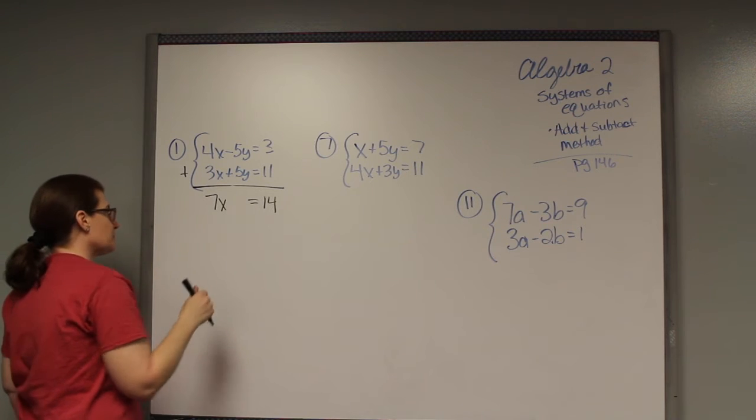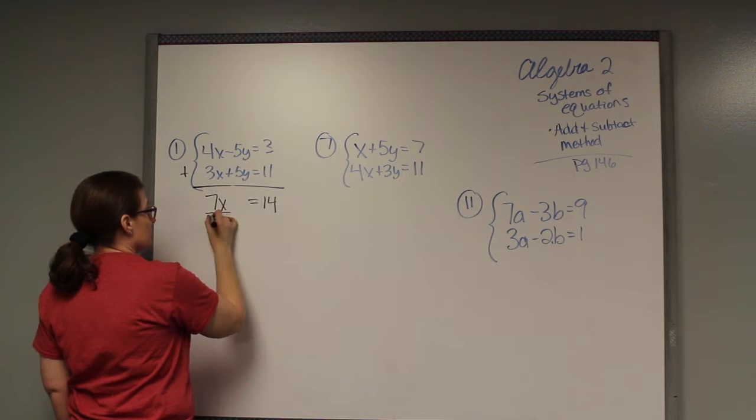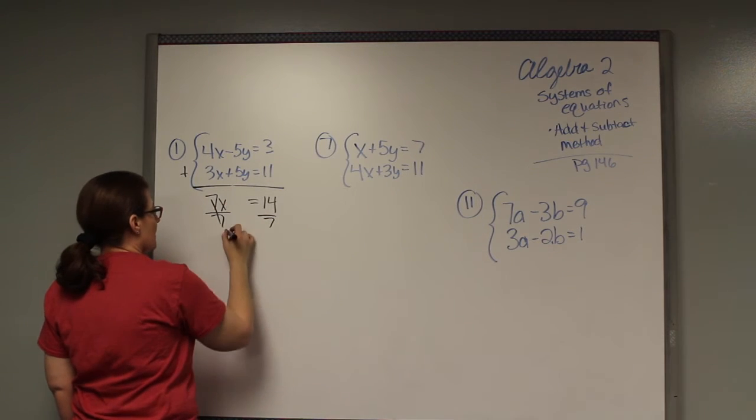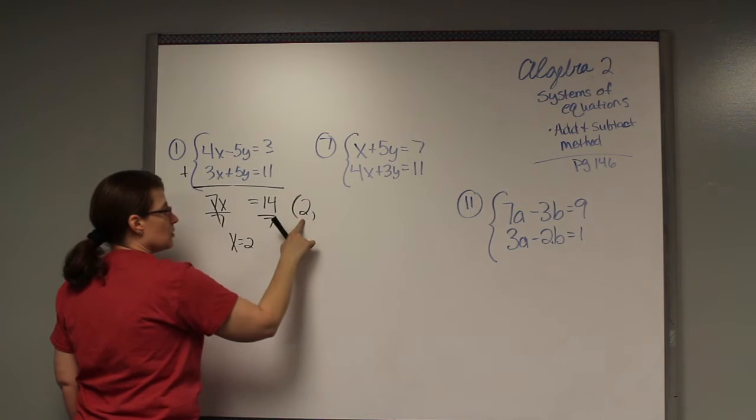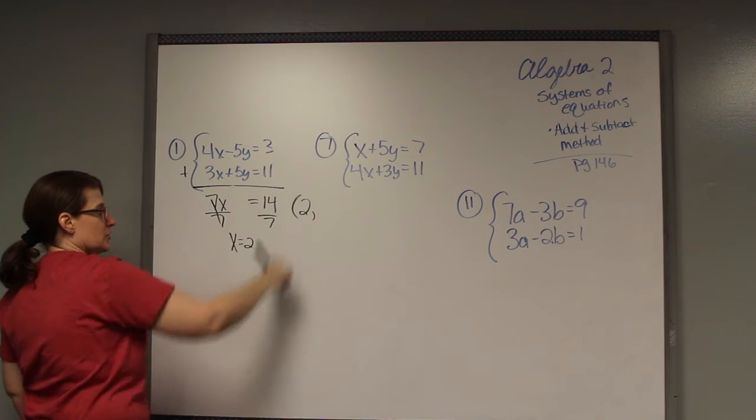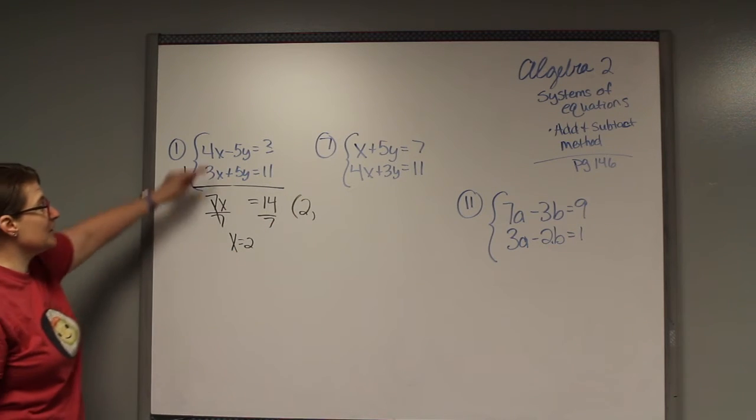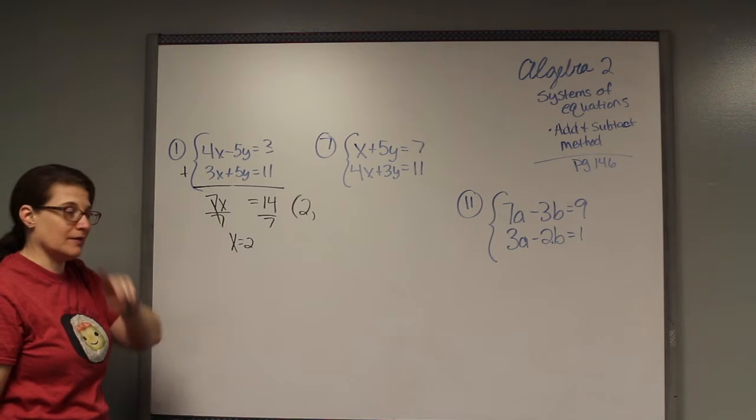Now I can solve for x, which is the first part of my answer. Divide by 7, x equals 2. So in my answer, my coordinate pair, 2 is the x, which is the first number in that pair.